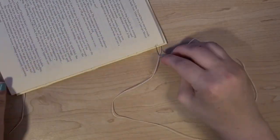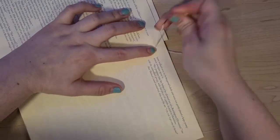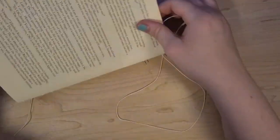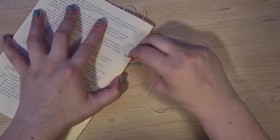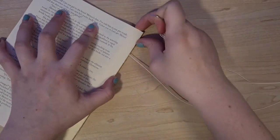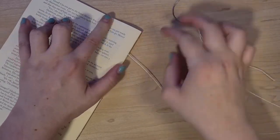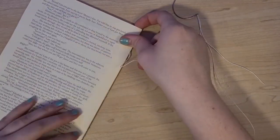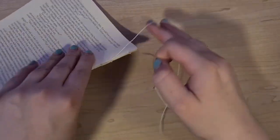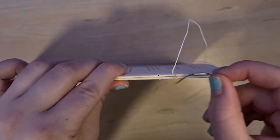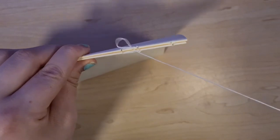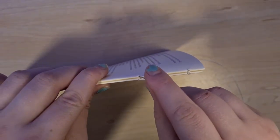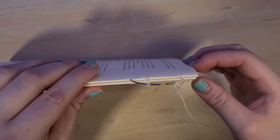For the second signature just go into the first hole with the thread from the first so they connect. When you come out of the second hole though, thread the needle under the first signature's thread to make a twist, then thread it back into the signature's hole and continue like this for the rest.